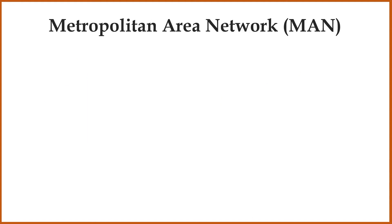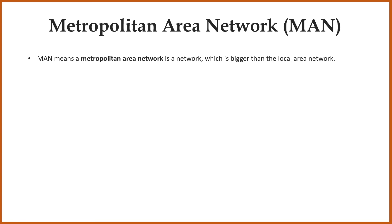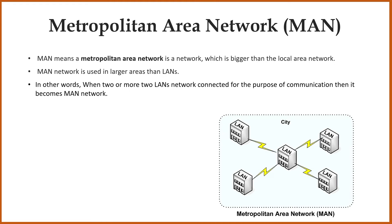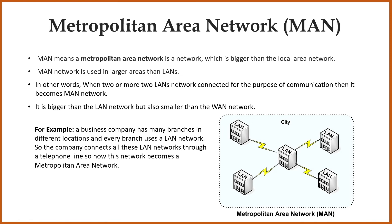Next is MAN network. MAN means metropolitan area network, which is a network bigger than a local area network. MAN network is used in larger areas than LANs. In other words, when two or more than two LAN networks are connected for the purpose of communication, then it becomes a MAN network. So these types of networks are bigger than the LAN network but smaller than the WAN network. For example, a business company has many branches in different locations, and every branch uses a LAN network. The company connects all these LAN networks through a telephone line, and now this network becomes a MAN network.